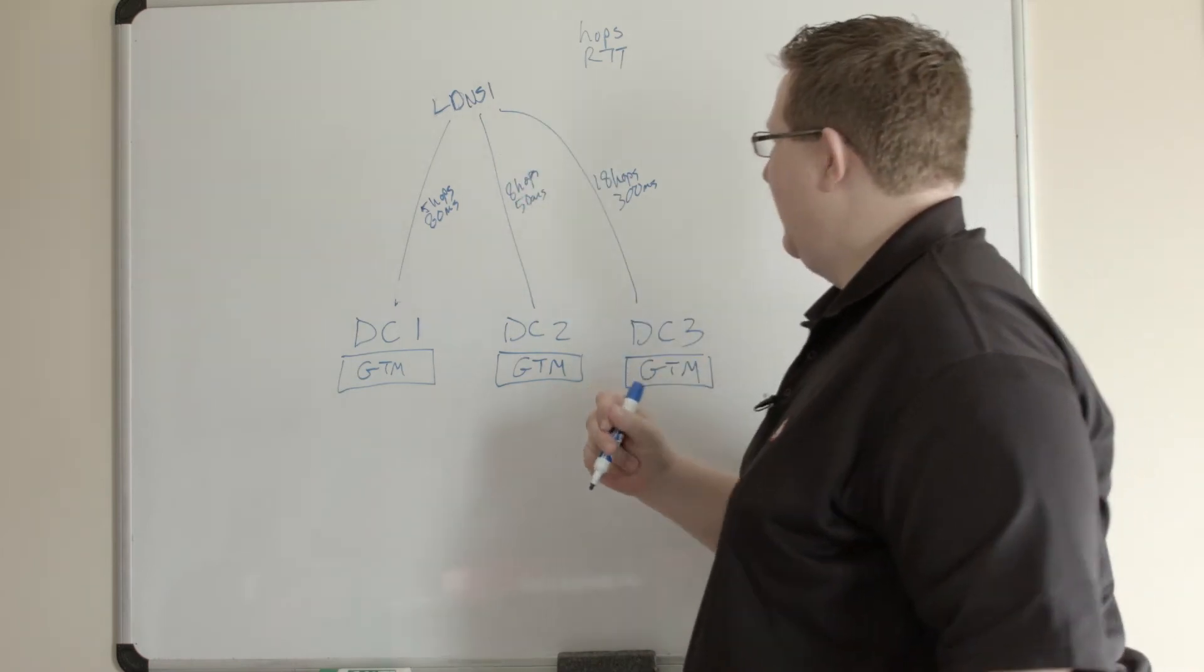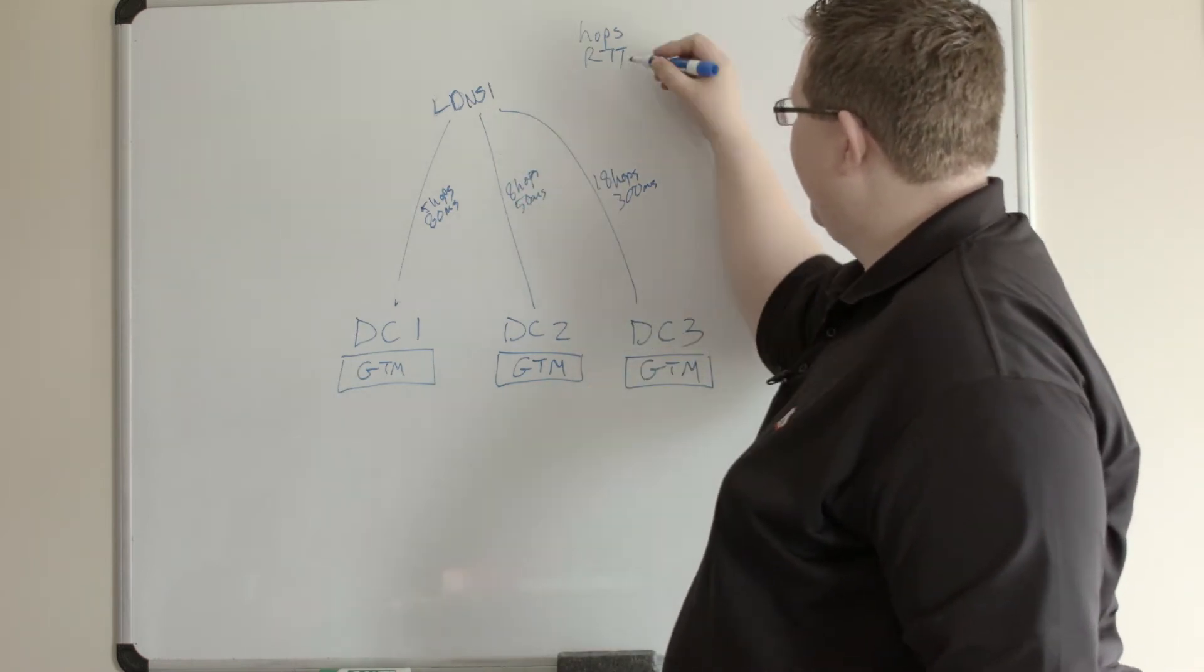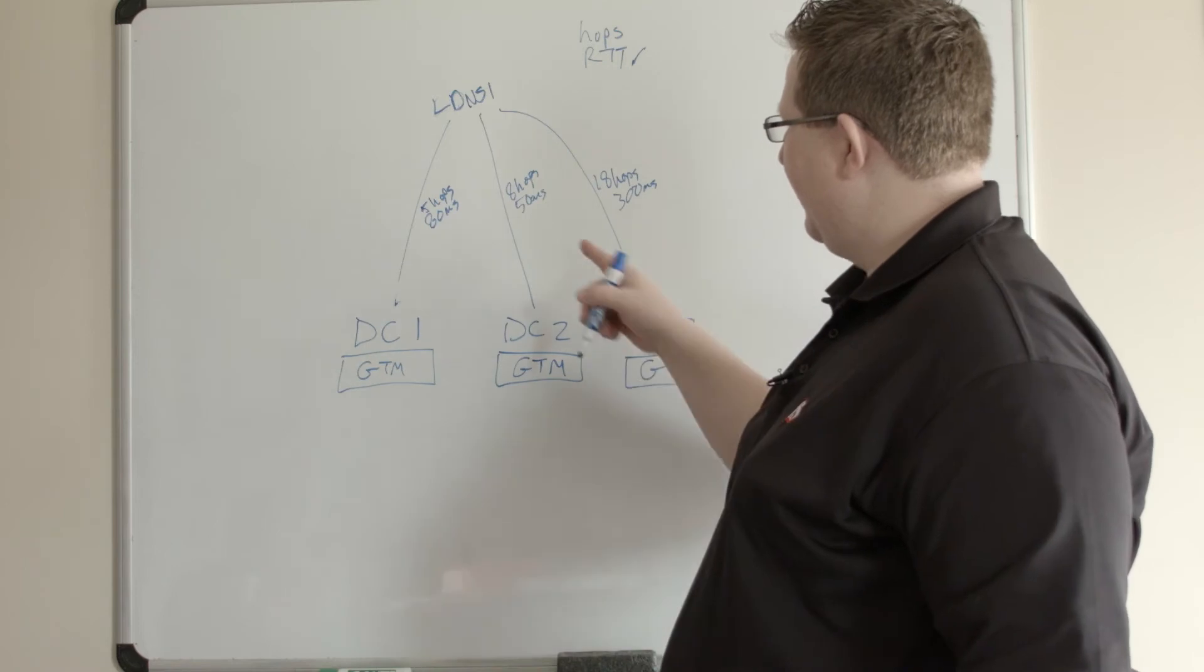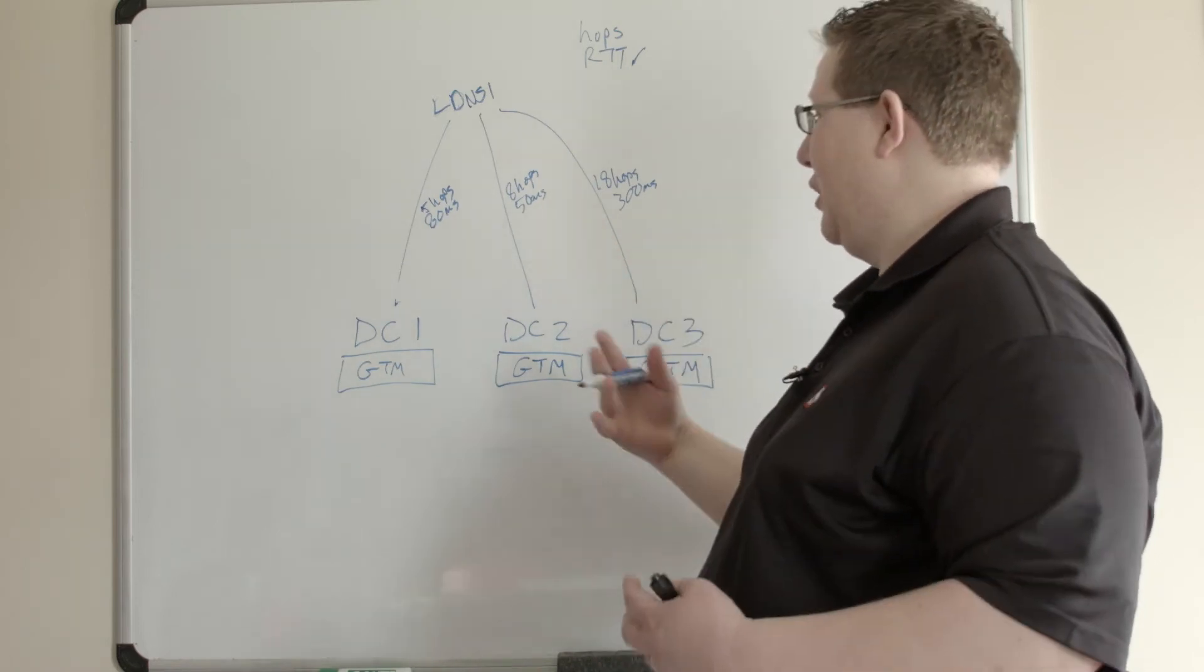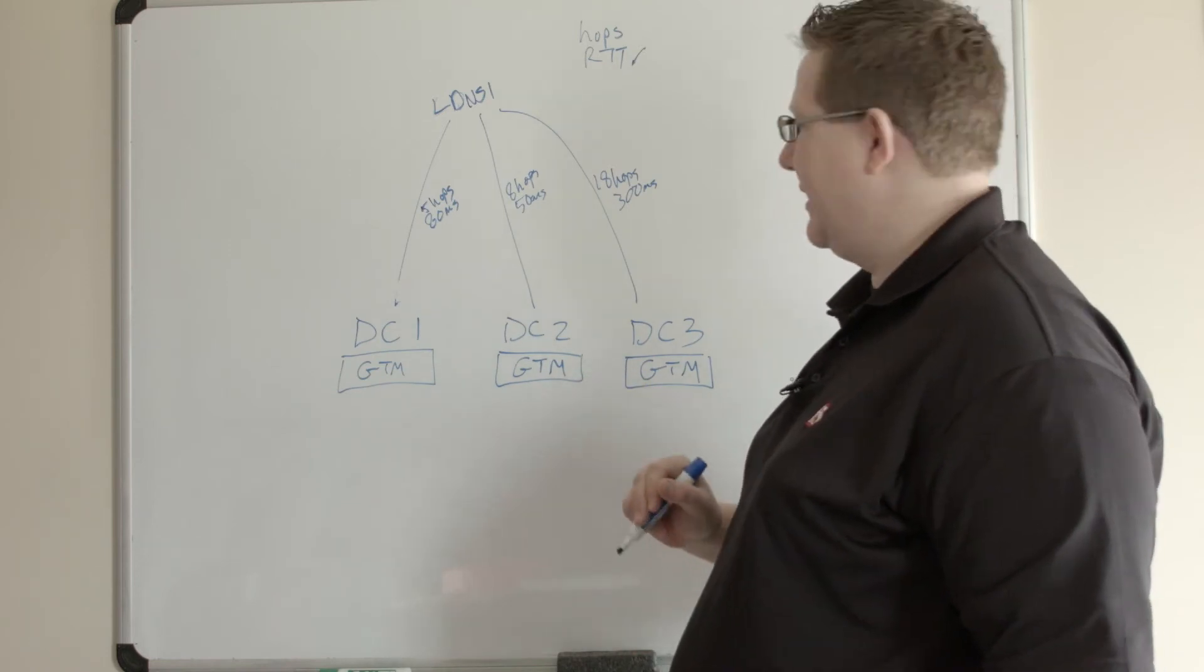So, for my LDNS, then, with a round trip time setting, it's going to choose the 50 milliseconds because it's the closest by round trip time to this data center.